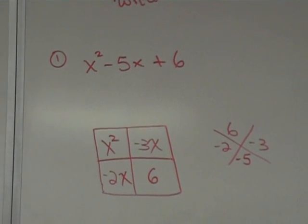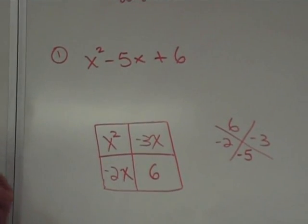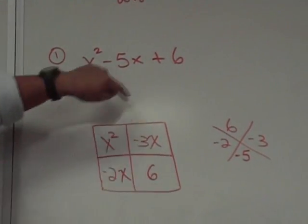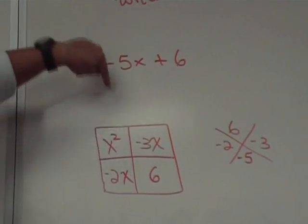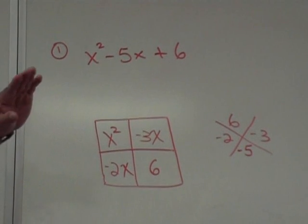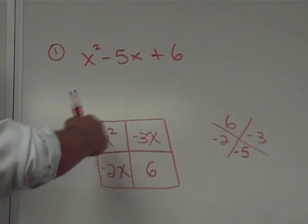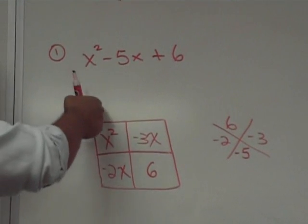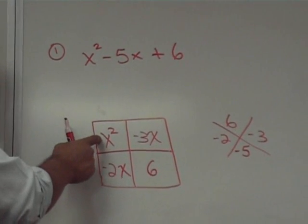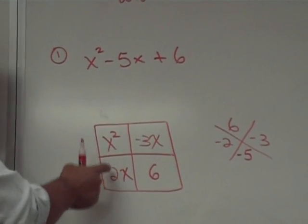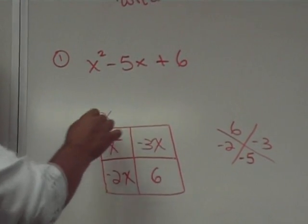What's the last step? What is the last step in this factoring process? We look for the common factors along the columns and the rows. And remember that you look at the first term in the column on each row. And if that term is negative, you factor a negative factor here. In this case, it's a positive X squared. What do these two have in common? An X. So, we're going to factor X.